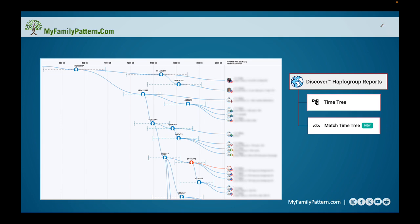Both are exactly the same except the difference is the match time tree actually maps over your matches by name and their earliest known paternal ancestor if indicated. Now again, I've blurred those out, but what I want to show you here is what I really like about it.